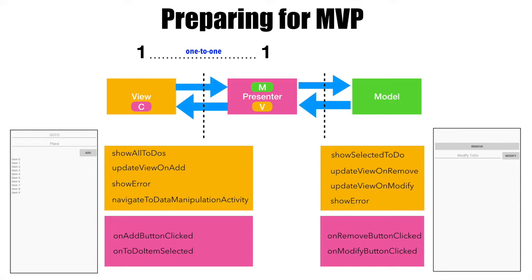So, for every screen, there is a view and a presenter. There is a one-to-one mapping between the view and the presenter for each screen. And whoever is going to implement the MVP will have to implement the view and the presenter for that particular screen. In a way, there is a contractual relevance between the view and presenter for the screen that you will be implementing. Understanding this particular pattern is very important when we actually get down to implementing it. So, park this idea in your mind.